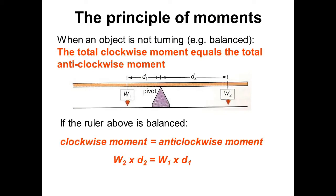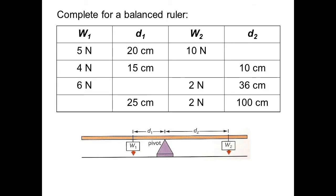The principle of moments applies when a body is balanced and not turning: the anticlockwise moments must equal the clockwise moments. You can balance a seesaw by adjusting weights to the right positions. For example, a force of 5 N at 20 cm gives a moment of 100 Nm; to balance it on the right, two numbers must also multiply to 100, such as 10 N at 10 cm.